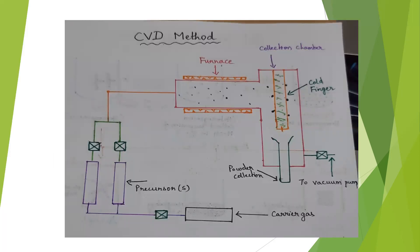In this method, metallo-organic compounds are used as precursors. A carrier gas is bubbled through a precursor at room temperature, and the vapor stream is introduced at a controlled rate into a vacuum chamber via a needle valve. The carrier gas is preferably an inert gas used in this CVD process.